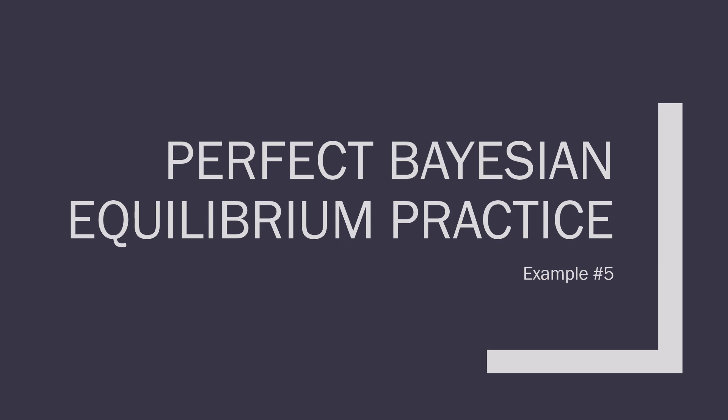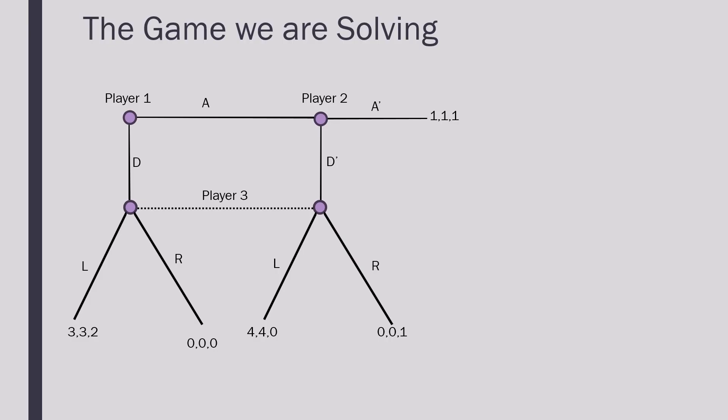Hello everybody! Welcome to this fifth example where we're going to compute a perfect Bayesian equilibrium. This is going to be Selten's Horse — the game that we are going to be solving, where we have three players in this context.